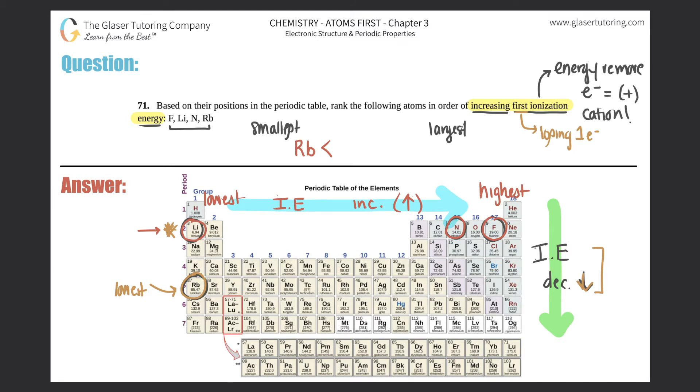So rubidium would have the lowest, then comes lithium, which is lower than nitrogen, which is lower than fluorine. Fluorine would have the highest first ionization energy. It would require a lot of effort to get rid of one electron, as opposed to rubidium who would have the smallest ionization energy. And that's it.